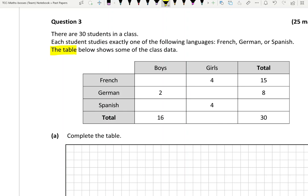You're asking what's their gender - are they a boy or girl - and what language are they learning: French, German, and Spanish. Now this is made particularly easy. We're going to read the question carefully. There are 30 students in the class, and that's where that number there, 30, comes from.